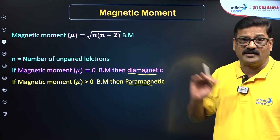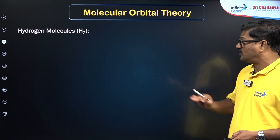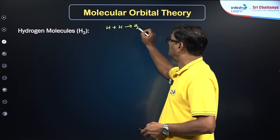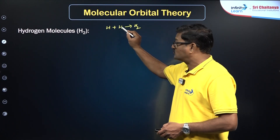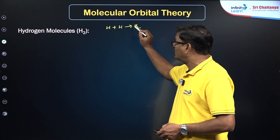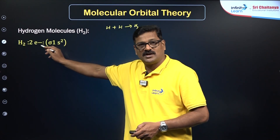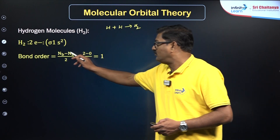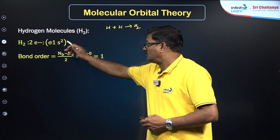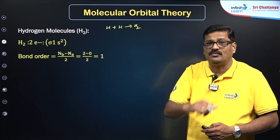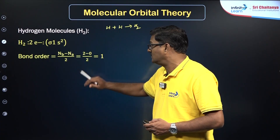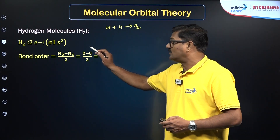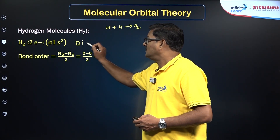Let us apply molecular orbital theory to the hydrogen molecule. H + H gives H₂. Each hydrogen has one electron, so H₂ has two electrons: configuration σ1s². The bond order = (2 − 0)/2 = 1, so a single bond exists. There are no unpaired electrons, so hydrogen molecule is diamagnetic.